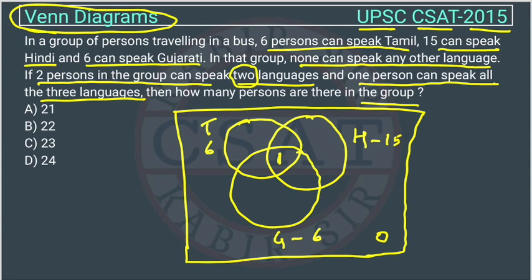They may be speaking Tamil and Hindi — so there could be 2 here, or 2 elsewhere, or it could be 1 and 1 because the total is 2. It will not affect us because we have to find the total number of people. It will not matter what languages they are speaking because in the end we just need the total number of people.